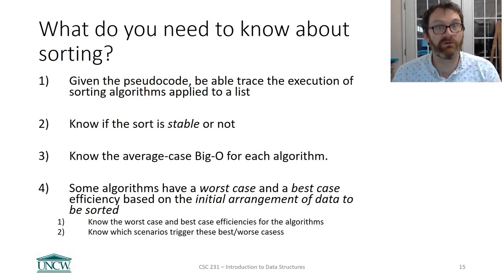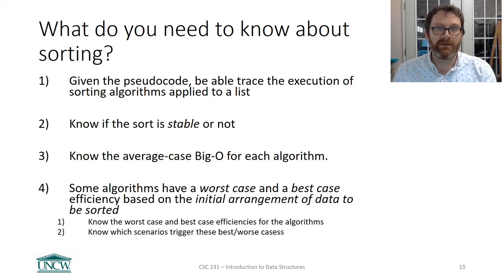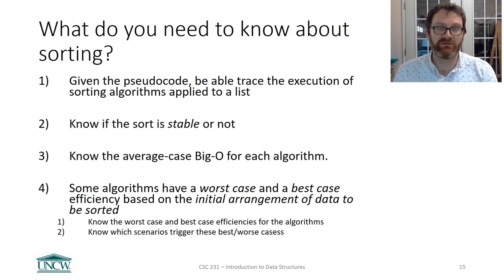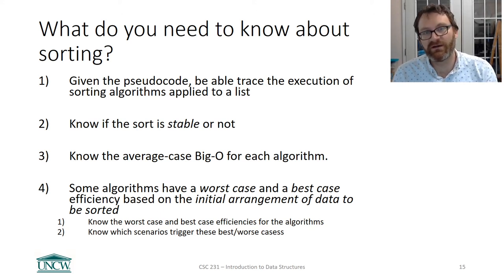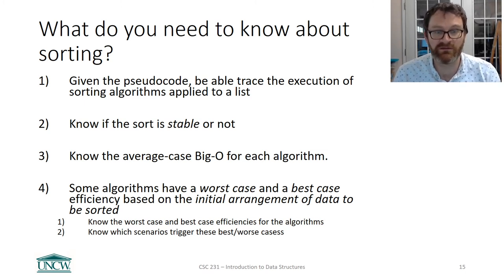In general, the average case is what we care about. Here's what I want you to be able to do: if given the pseudocode for an algorithm, you should be able to trace the execution of the sorting algorithm applied to a list, just like we did in the handouts. You also need to know whether a sort is stable or not, which gives you as a developer a hint about which sort to use.